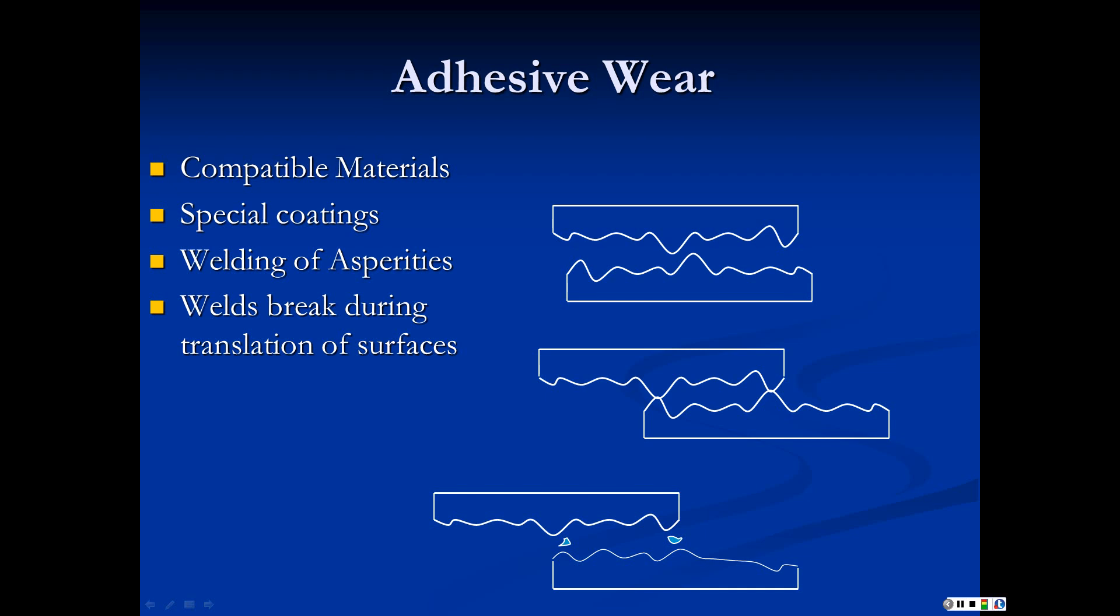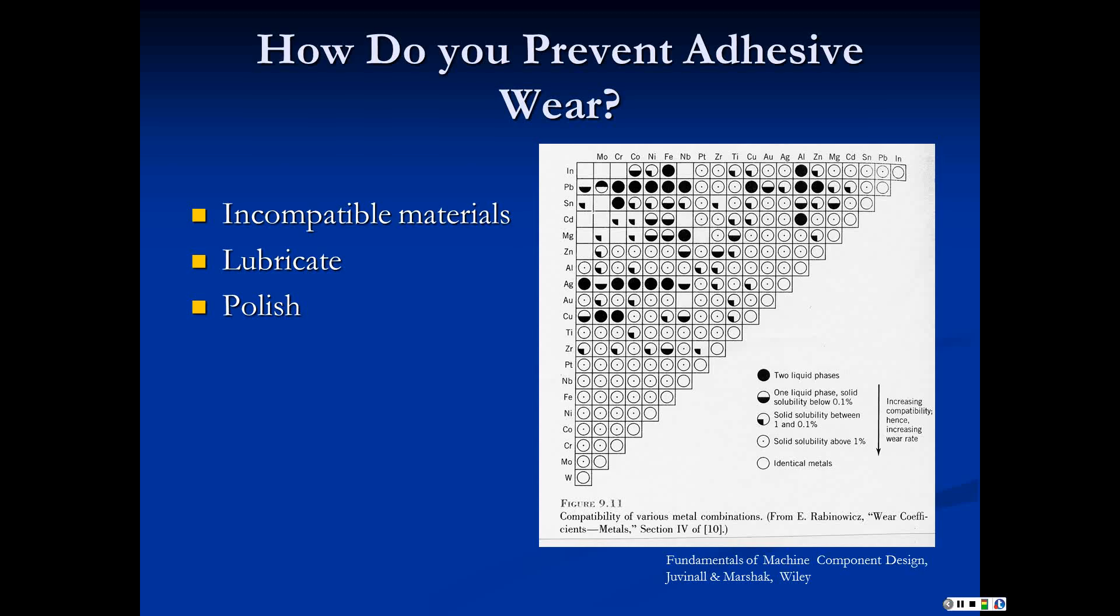In adhesive wear, you have surfaces that are sliding. When you zoom in on any surface, it's actually not smooth. At a small enough scale, you have surface roughness called asperities. As the surface slides, these asperities contact. When they contact, if they are compatible, they weld - they're going to fuse into a single piece. As you continue to slide them, you break those welds, and in the process, you probably lose some material. You may transfer the material from one to the other, but you're also going to have some just disappear, come loose from the surface. This requires compatible materials.